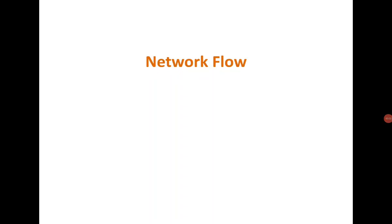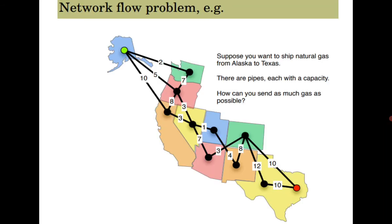Good morning everyone. Today we are going to start a new chapter: network flow. Let's see this example. Let's say there is a green place and a red place, and we want to transport oil or any other substance from one place to the other through pipes with a given capacity — you can see the capacity in liters.